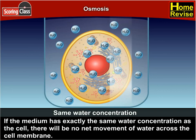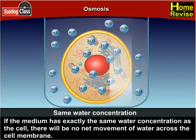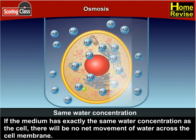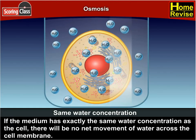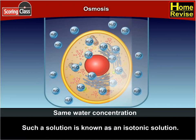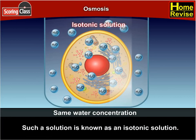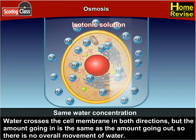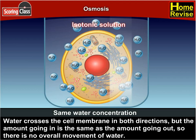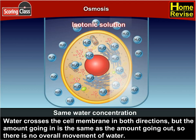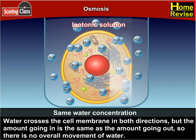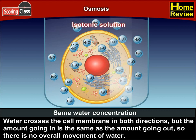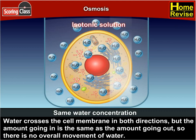The second possibility is that if the medium has exactly the same water concentration as the cell, there will be no net movement of water across the cell membrane. Such a solution is known as an isotonic solution. Water does cross the cell membrane in both directions, but the amount going in is the same as the amount going out, so there is no overall movement of water.